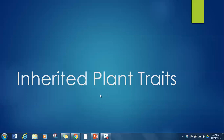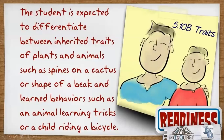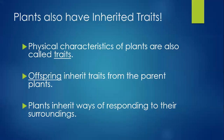Welcome back students. Today we're going to be working on Lesson 2, Inherited Plant Traits. Let's review the objective. The student is expected to differentiate between inherited traits of plants and animals, such as spines on a cactus or shape of a beak, and learned behaviors such as an animal learning tricks or a child riding a bicycle.